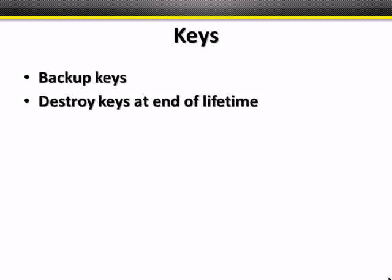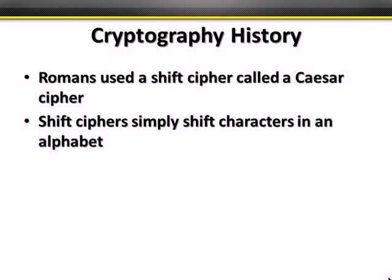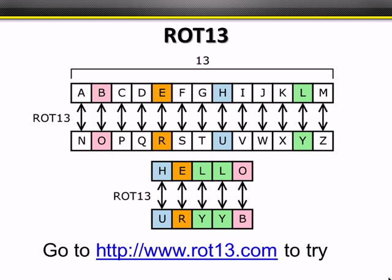In a short history lesson: the Romans used a shift cipher called a Caesar cipher — one of our key ideas of confusion. Shift ciphers shift letters, so A becomes D with a shift of three. One classic shift cipher is ROT13, short for rotate 13 characters, where A becomes N, B becomes O, and so on. The interesting thing about ROT13 is that the same algorithm both encrypts and decrypts. For example, 'hello' becomes U-R-Y-Y-B.